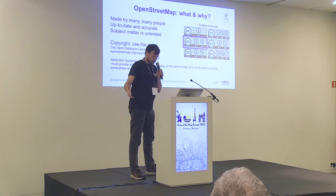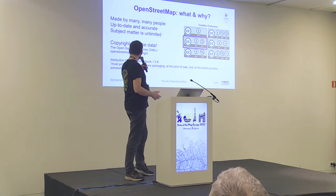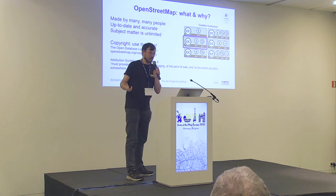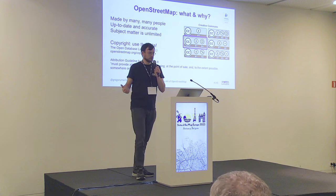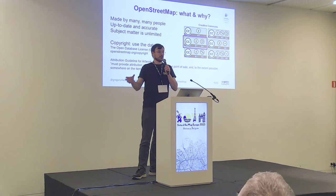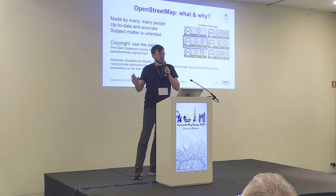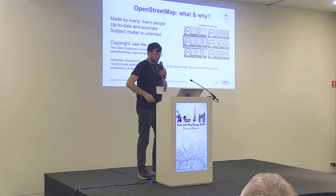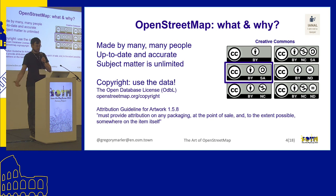You just have to look at OpenStreetMap.org/copyright. That links to the attribution guidelines - section 1.5.8 states it must provide attribution on packaging at the point of sale, and to the extent possible, somewhere on the item itself. If you've got a picture on a wall, normally they have a description with the artist and the materials - I think it probably has to say OpenStreetMap there. It maybe depends where you are on your art career. If it's a one-off, it's probably okay. Or you could ask the licensing working group.